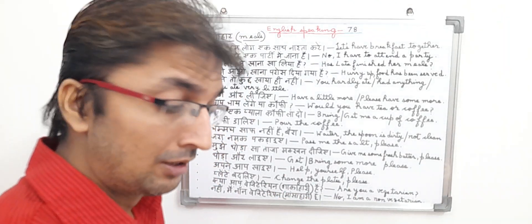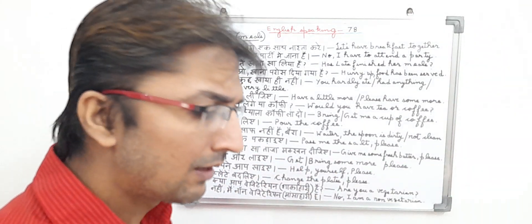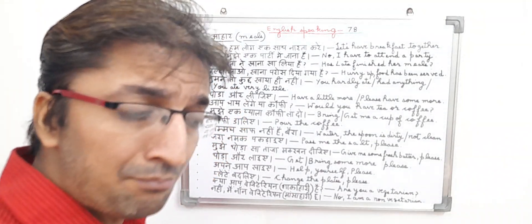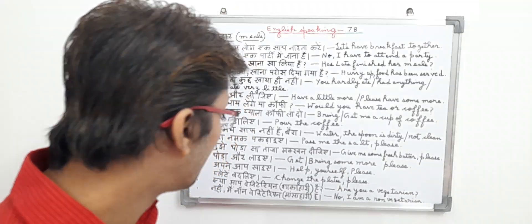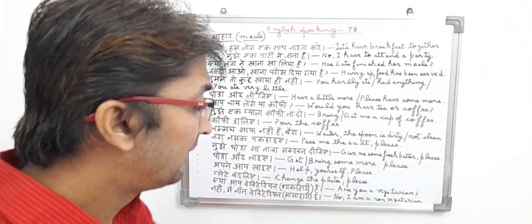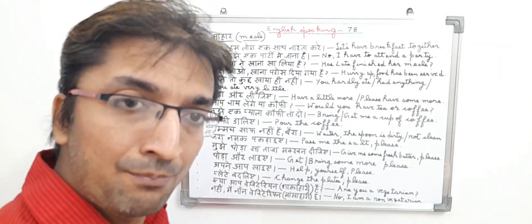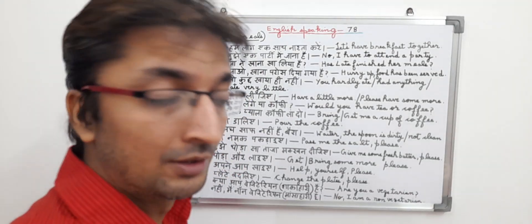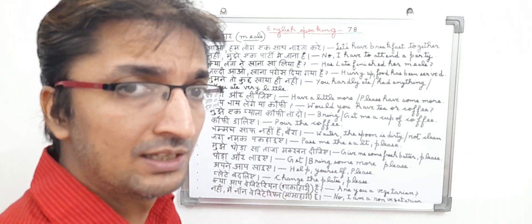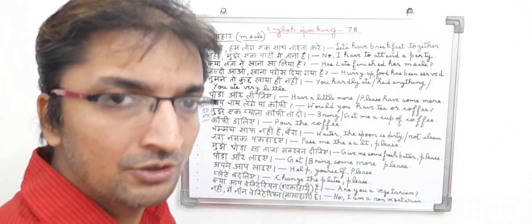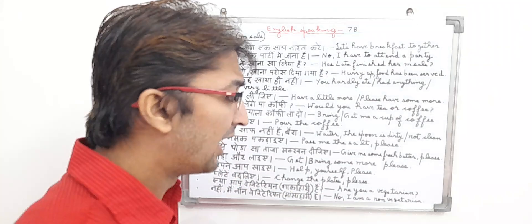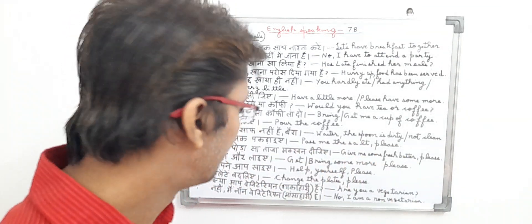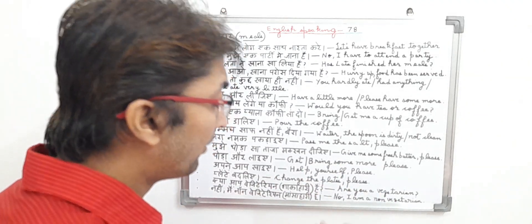In English, it means 'Are you a vegetarian?' It is an interrogative type sentence where one person is asking another whether they are vegetarian. In English, it means 'Are you a vegetarian?' It is a present interrogative type and meal type sentence. The reply in English means 'No, I am a non-vegetarian.' The person is describing himself — he does not eat veg, he eats only non-veg. It is a present type meal type sentence.